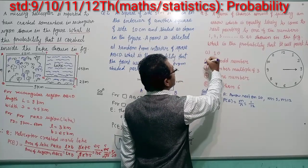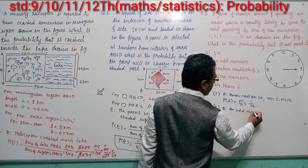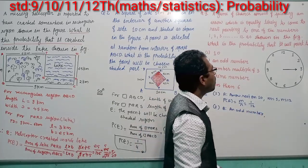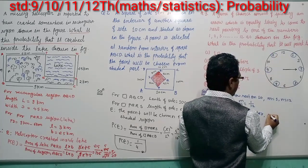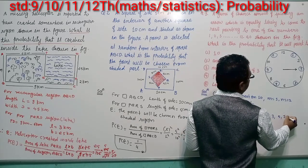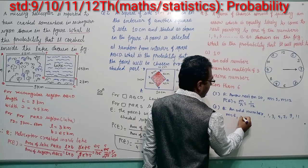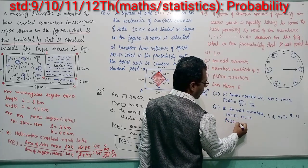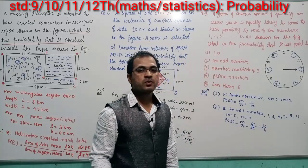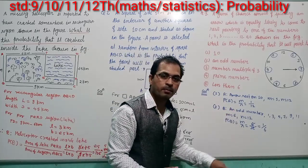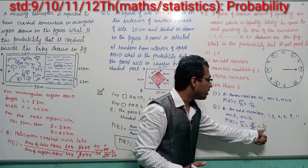Sub-question B: let event B be that the arrow rests on an odd number. The odd numbers from 1 to 12 are: 1, 3, 5, 7, 9, 11. So favorable events m = 6 and total outcomes n = 12. P(B) = 6/12 = 1/2. The probability that the arrow comes to rest on an odd number is 1/2.